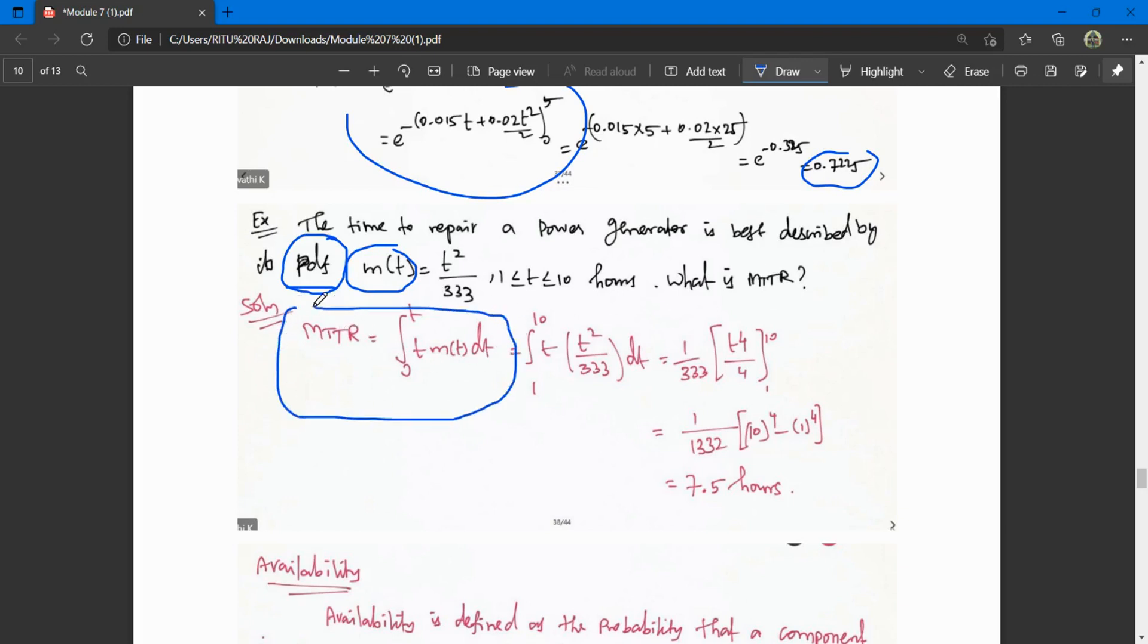The MTTR formula is integral from 0 to t of t times m(t) dt. Here time varies from 1 to 10, so limits change to 1 to 10. m(t) is t squared by 333. When we integrate, we get t to the power 4 by 4, limits 1 to 10. This gives 7.5 hours. These are easy questions.